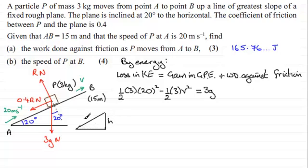This is h that we're trying to find. We know this distance here is 15 metres and this angle in here is 20 degrees. So it's just basic trigonometry for a right-angled triangle. The sine of 20 degrees equals the opposite side, h, divided by the hypotenuse, 15. So if we multiply both sides by 15, we can see that h equals 15 times the sine of 20 degrees. So we'll put that in here for the gain in gravitational potential energy, mgh. So we'll just put that as 15 times the sine of 20 degrees.